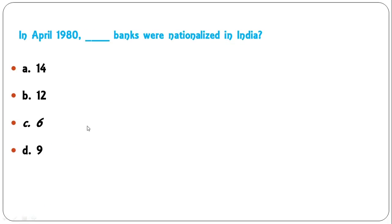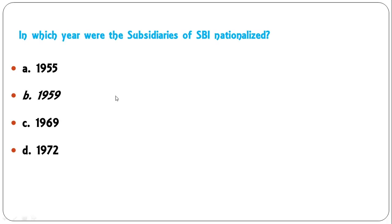How many banks were nationalized on 19 July 1969 — 15, 6, 9, or 14? On that date, 14 banks were nationalized in the first wave of nationalization. In April 1980, the second nationalization occurred, in which six more banks were nationalized in India.